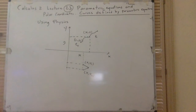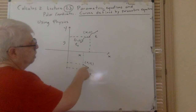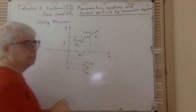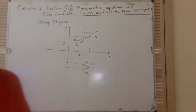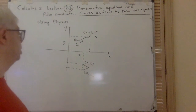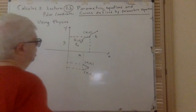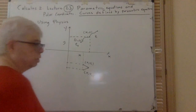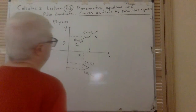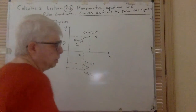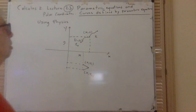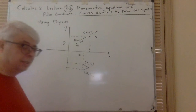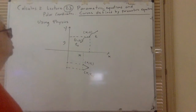However, locally — meaning in some small neighborhood — we can say it is in fact a function. Globally we can't say much; this is related to what we call the implicit function theorem, one of the most important theorems in all of mathematics. Globally, Y is not a function of X, but both X and Y are functions of time T. Using ideas from physics, we were able to define a curve.